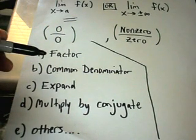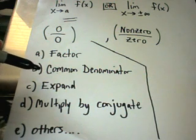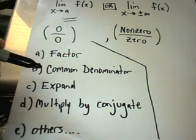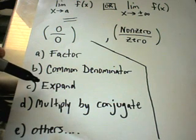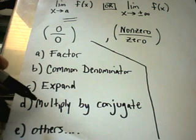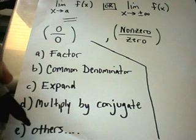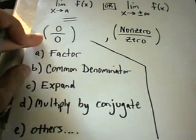One is you can try to factor and cancel. If there's a fraction floating around, try to get common denominators and simplify it down. If there's something to multiply out, try to expand it and multiply it out and see if that helps. If there's a radical involved, try multiplying by the conjugate.